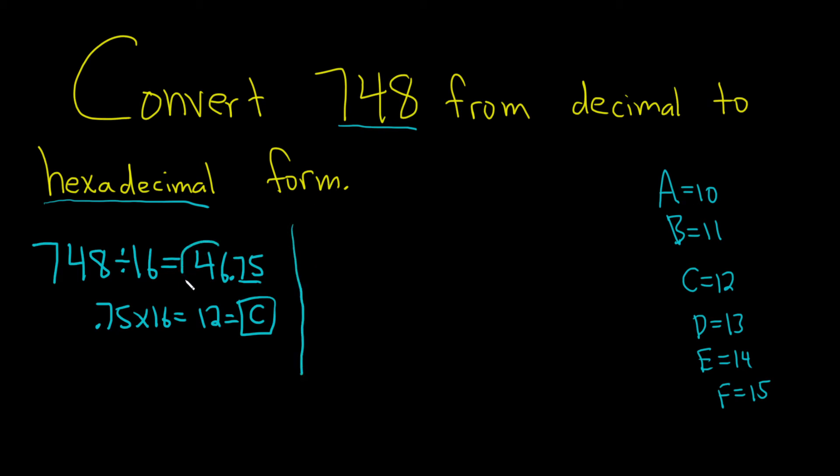Then you repeat the process. You take this number, divide it by 16. So 46 divided by 16 - again, we just care about the remainders. So 46 divided by 16, 2.875. We care about the 2 also because we use it. Then we take this, multiply it by 16, and that gives us the remainder. 0.875 times 16 - I got 14. That's E in hexadecimal.